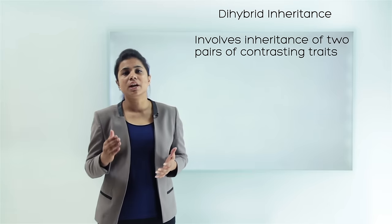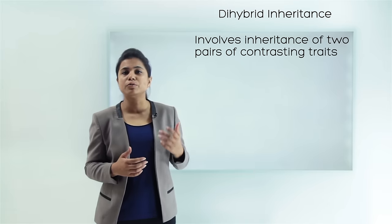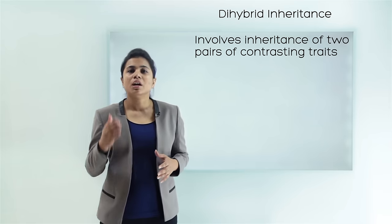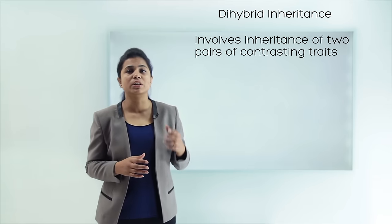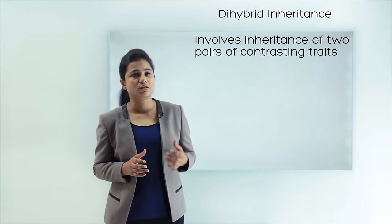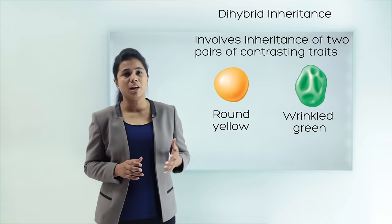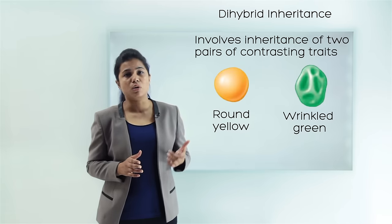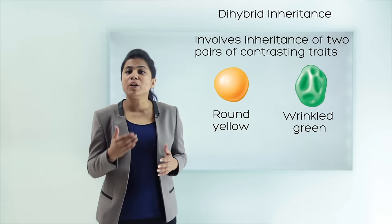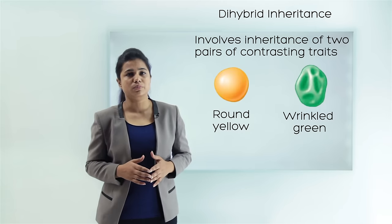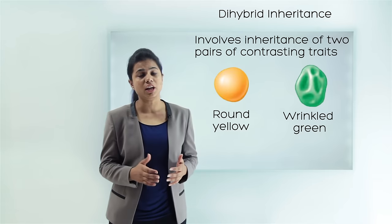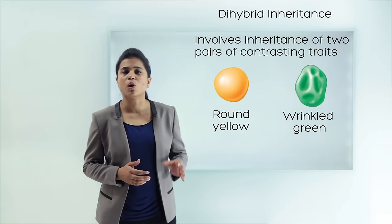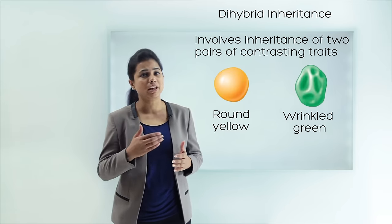In dihybrid inheritance, it involves inheritance of two pairs of contrasting traits or two pairs of contrasting characteristics at the same time. The contrasting traits chosen by Mendel were shape and color of the seeds of the pea plant — round and yellow, and wrinkled and green seeds. Each and every seed would either be round or wrinkled and also either green or yellow, so no seed would be missing either trait.